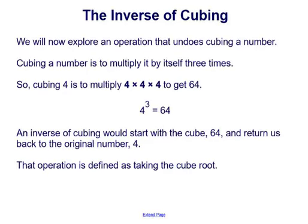We will now explore an operation that undoes cubing a number. Cubing a number means multiplying it by itself three times. So cubing 4, for example, is 4 times 4 times 4, which equals 64 — so 4 cubed equals 64. The inverse of cubing starts with the cube, 64, and returns us to the original number, 4. That operation is defined as taking the cube root.